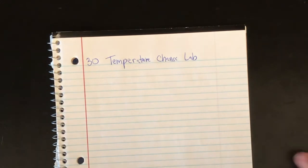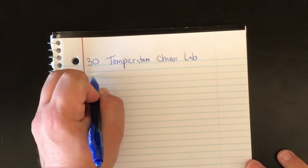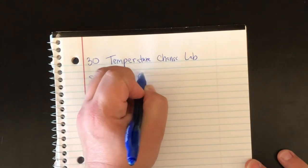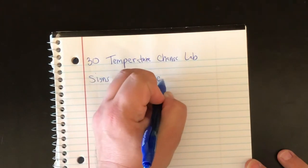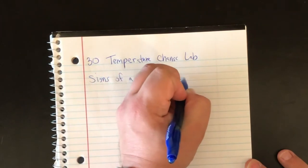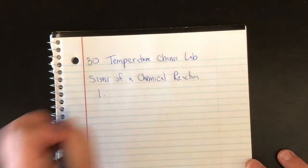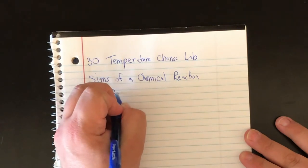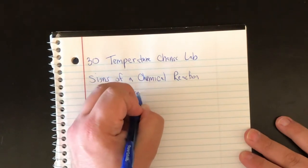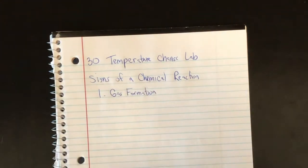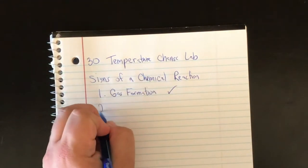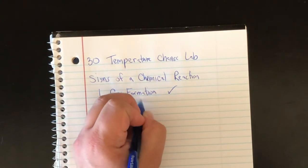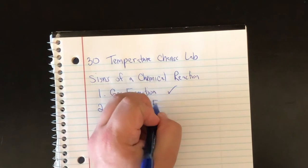Now, as a reminder, we talk about four signs of a chemical reaction, and as we wrote about in our last lab, the first one is gas formation, and we already saw that one. The second one is precipitate formation.